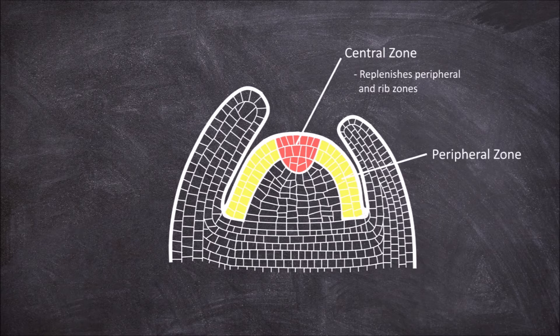The peripheral zone flanks the central zone. This zone has more and smaller cells than the central zone. Cell division in the peripheral zone gives rise to the leaf primordia.